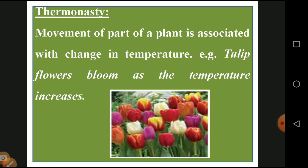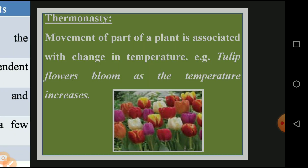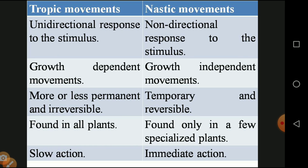Thermonasty: thermo relates to temperature. The movement of a plant or part of the plant associated with change in temperature is called thermonasty. The tulip flower is the best example — it grows in cold regions and opens only when it gets sufficient temperature. So the tulip flower is an example of thermonasty.